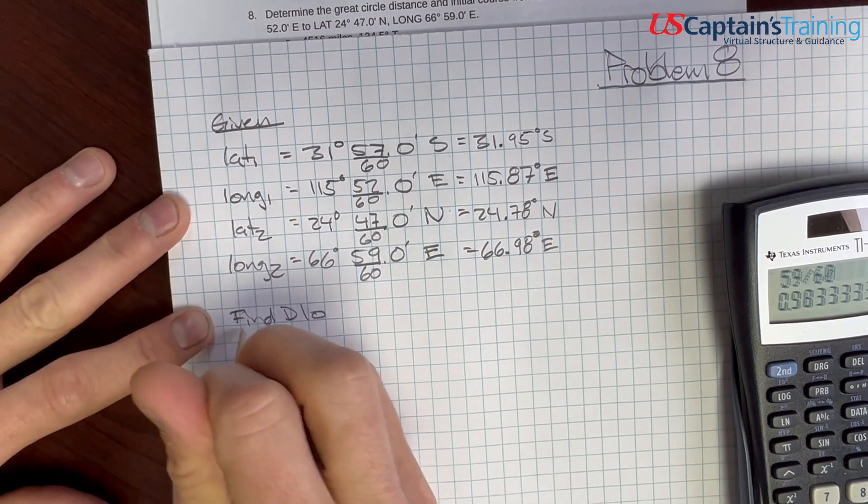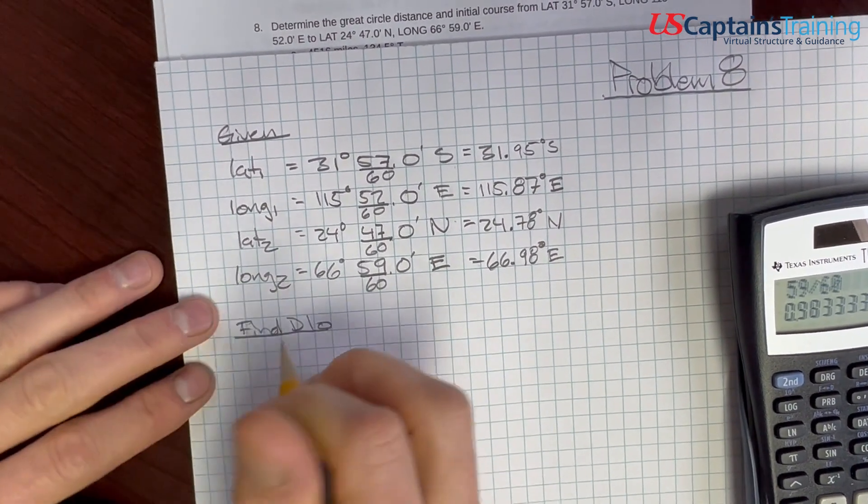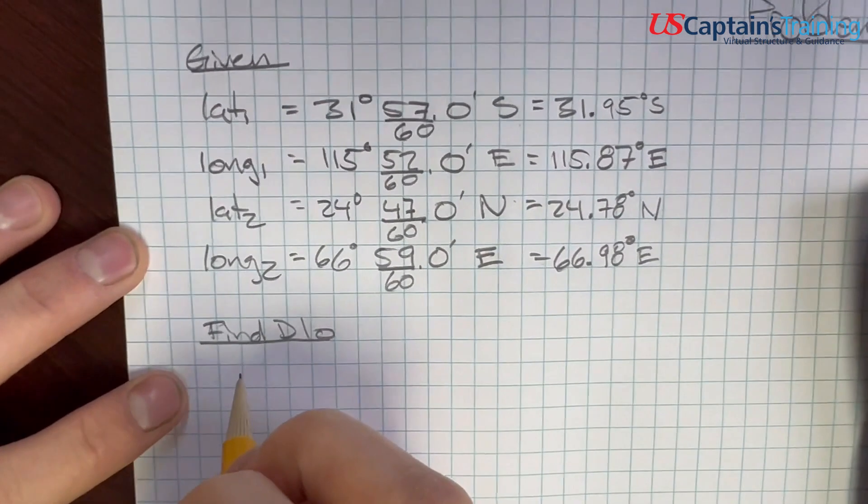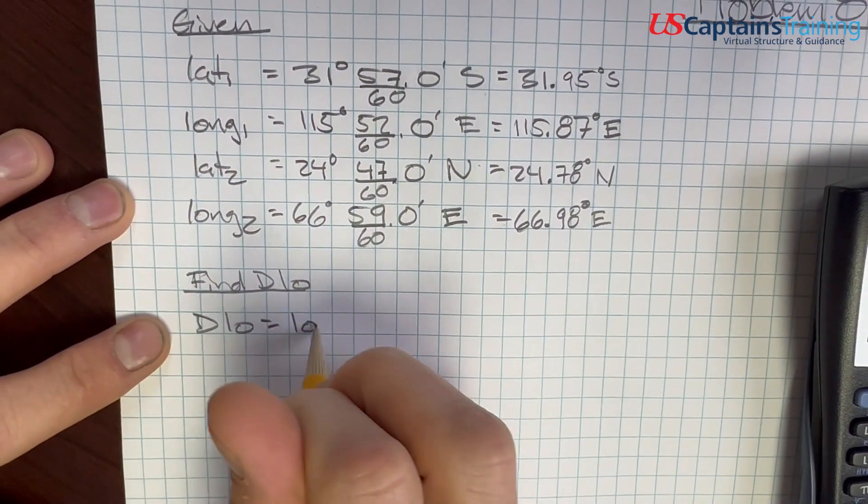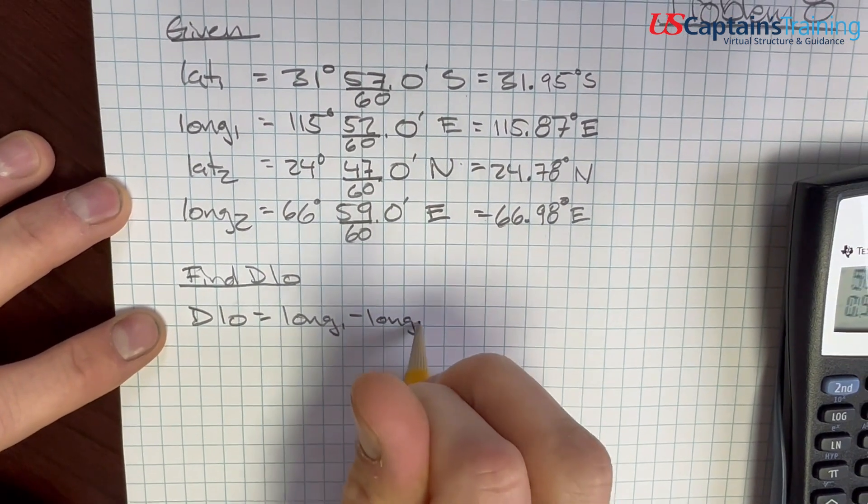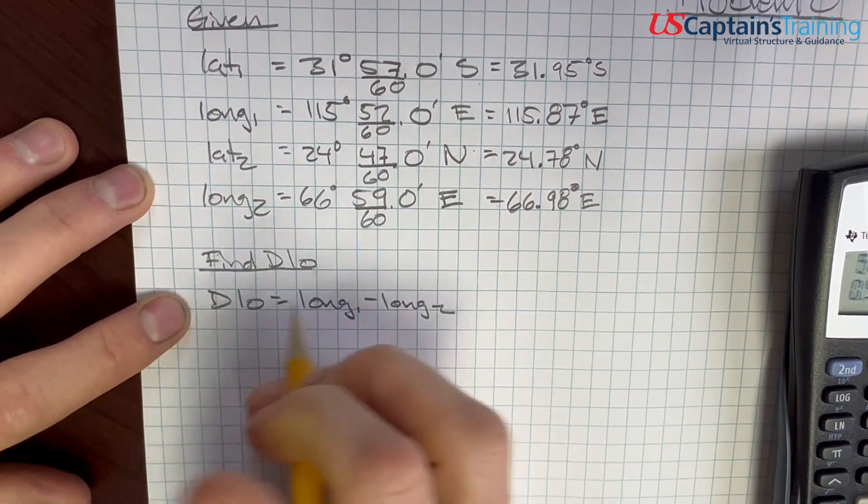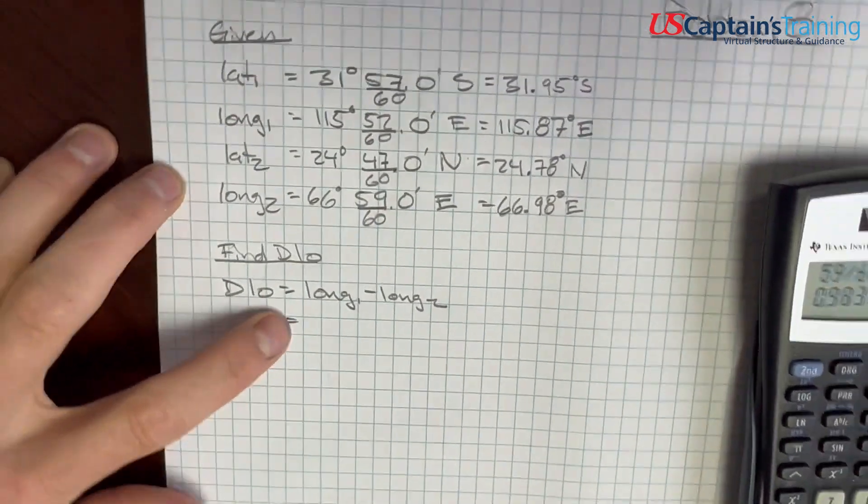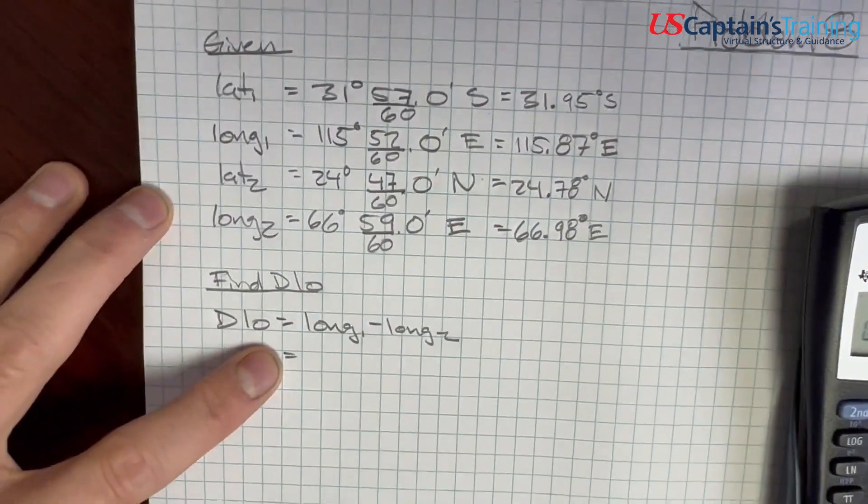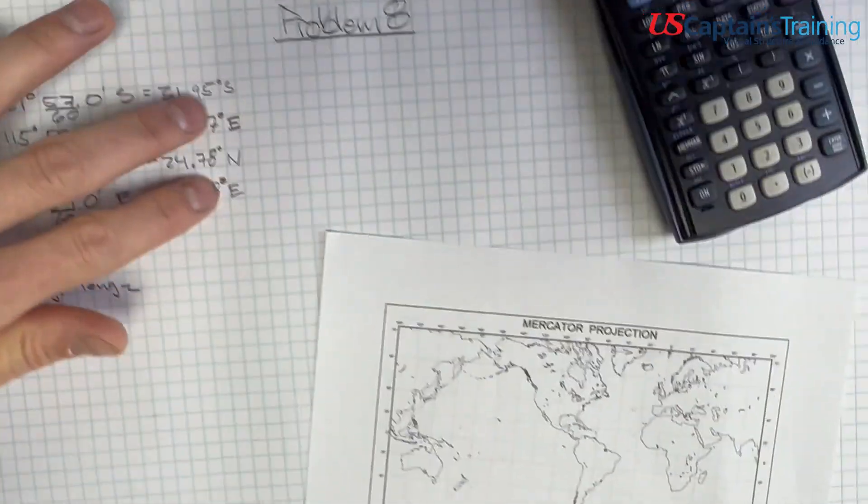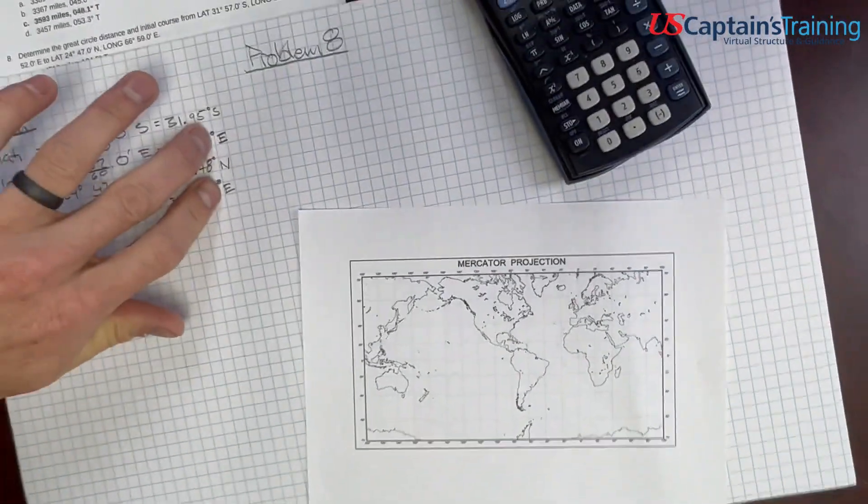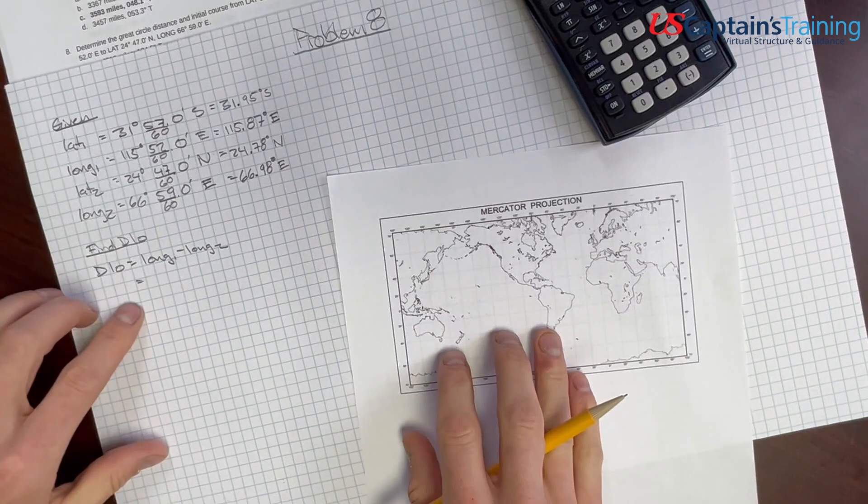Find D-low. What is D-low, you might ask? D-low is the difference between longitude 1 and 2. So, D-low equals longitude 1 minus longitude 2. It's really not this simple. It's just a way to represent that it's the difference between the two. How I like to do this is we look and we say, okay, they're both east. That makes things a little simpler, right?